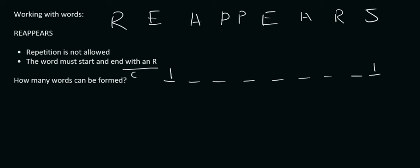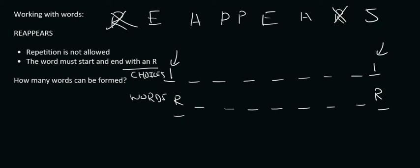So that was our choices. And then for the word, let's say there's an R there and an R there. Now these R's have now been taken away. I know there were two of them, but you don't put a two over there or there. You just use a one and a one.